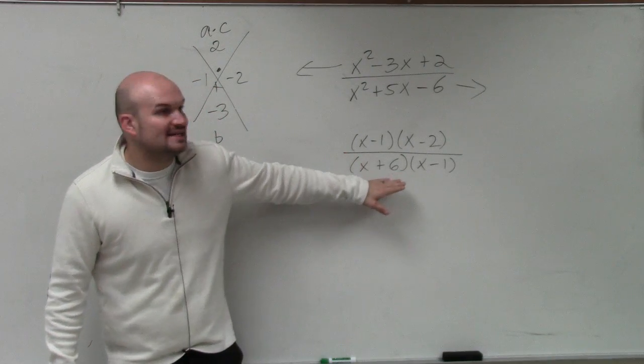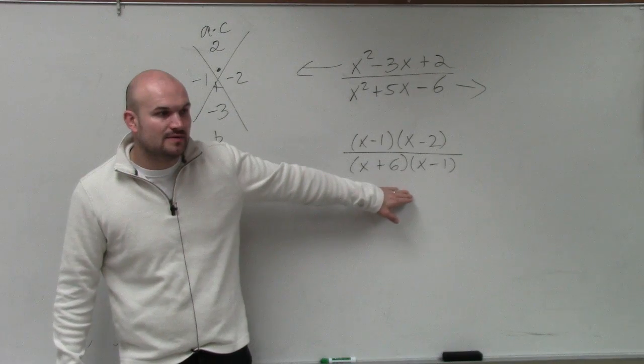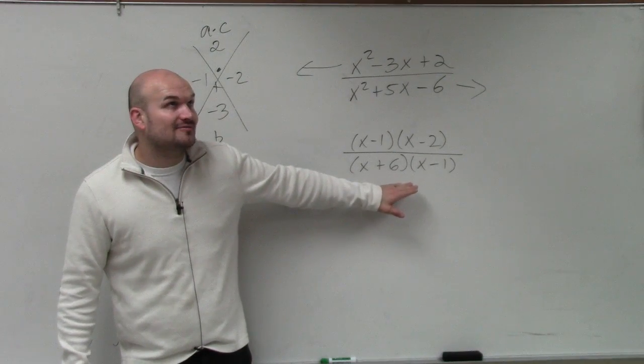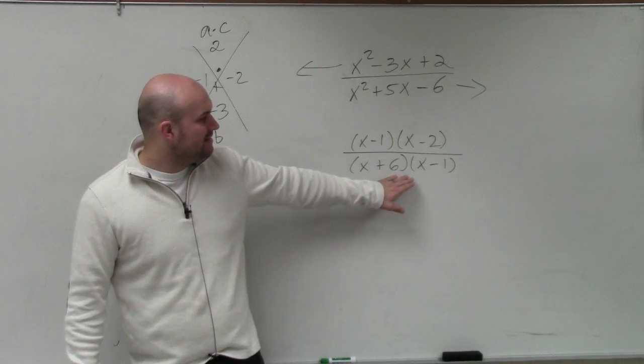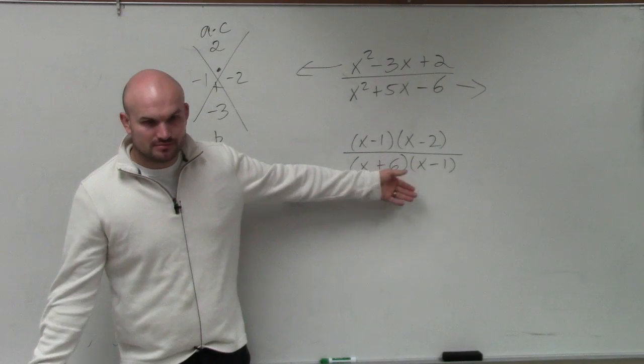Now that I have it in factored form, is it easy to identify what my restrictions are, what cannot equal 0? Or what my polynomial could not be, so the values equal to 0? So what is one value I cannot have?